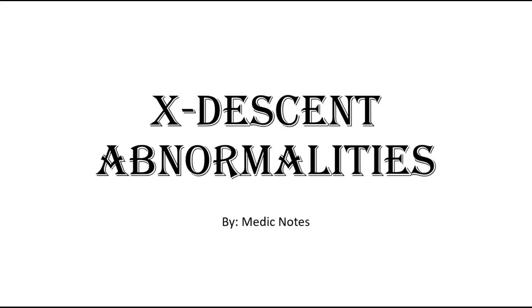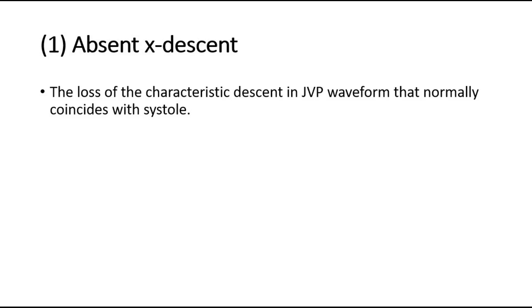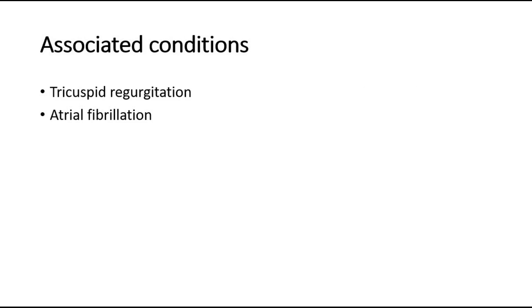Welcome back to another video of Medic Notes. This video is on X-descent abnormalities seen on JVP waveforms. The two abnormalities covered are absent and prominent X-descent. For absent X-descent, it is the loss of the characteristic descent in the JVP waveform that normally coincides with systole. Absent X-descent is associated with tricuspid regurgitation and atrial fibrillation.